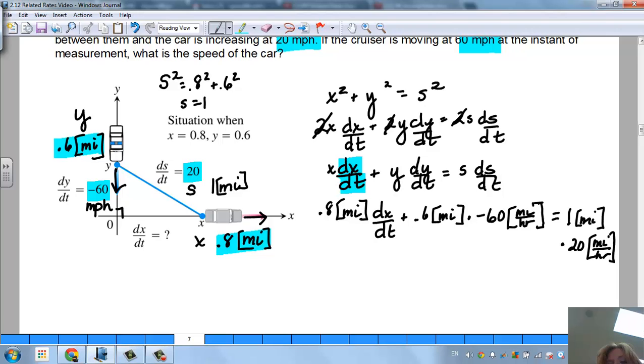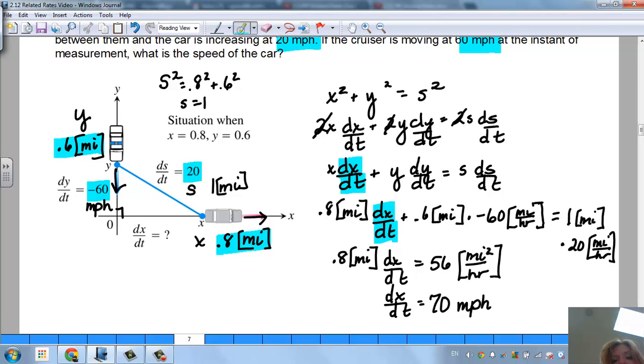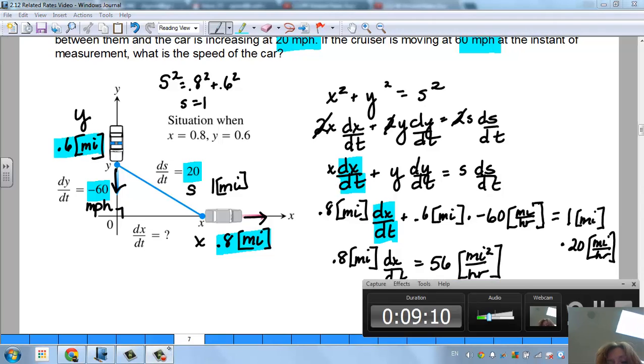So basically, the only thing we're doing here is we're going to solve for this. So if you go through and multiply and do all the algebra here, I'm going to end up going 0.8 miles dx/dt, and basically what I did was I multiplied these two and moved them over on the other side is going to equal 56 miles squared per hour. And then when I divide by 0.8, I get dx/dt is 70 miles per hour. And I'm kind of happy that that's positive because it's going in that right direction away. And as you can see, they're speeding because they're going 70 miles per hour. That's the end of these two problems.